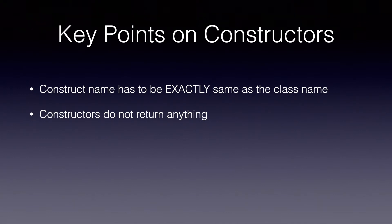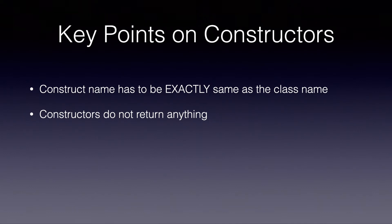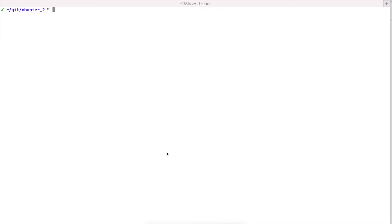A couple of key points about constructors: first, the constructor name has to exactly match the name of the class. In our case the class is called Person so the constructor must be named Person — and it is case sensitive. Second, constructors do not return any value. They look similar to methods but they do not return anything; their whole purpose is to create an object in memory and perform initialization.